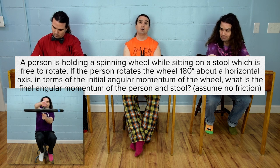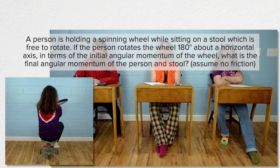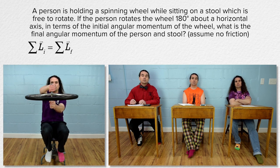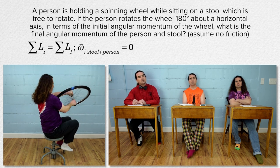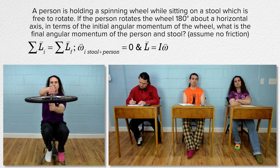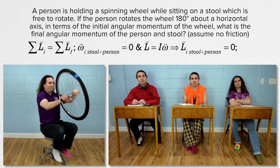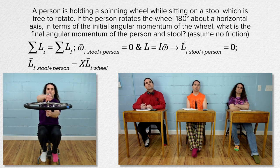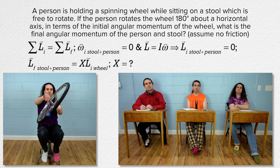We already showed that about a vertical axis of rotation through the center of the stool, angular momentum is conserved. Because the stool and person start out with zero initial angular velocity, and angular momentum of a rigid object equals rotational inertia times angular velocity, the initial angular momentum of the person and stool is zero. We are solving for the final angular momentum of the person and stool in terms of the initial angular momentum of the wheel, so: final angular momentum of the person and stool equals x times the initial angular momentum of the wheel, where x equals question mark.